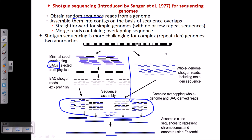One very important point: the sequencing method requires us to take very small segments. If we get a very small segment, we can easily sequence it using the dideoxy or Sanger method of DNA sequencing. For the Sanger method, we need a very small piece of DNA — we cannot apply it to a whole chromosome. So when we want to sequence an entire chromosome, we must first fragmentize it into smaller pieces until we obtain small DNA fragments.